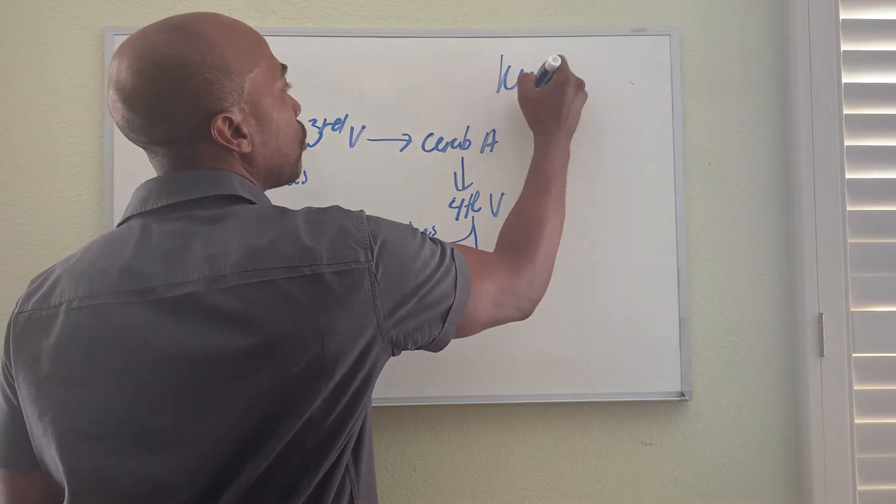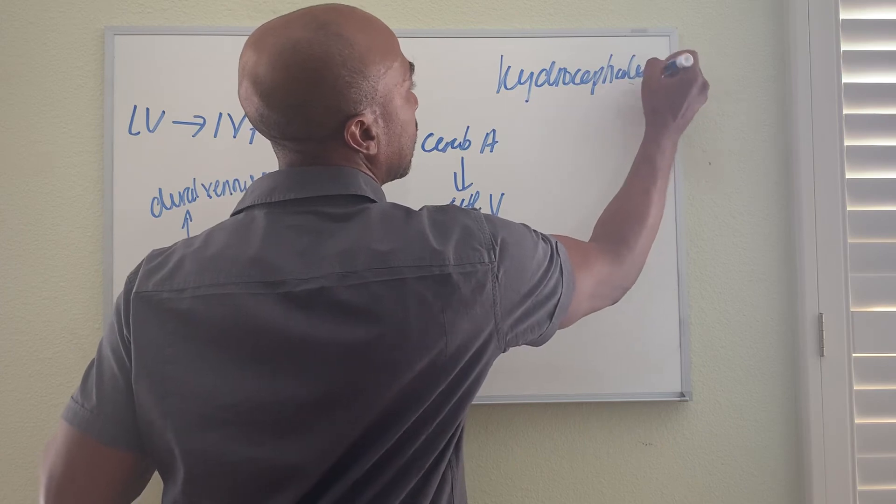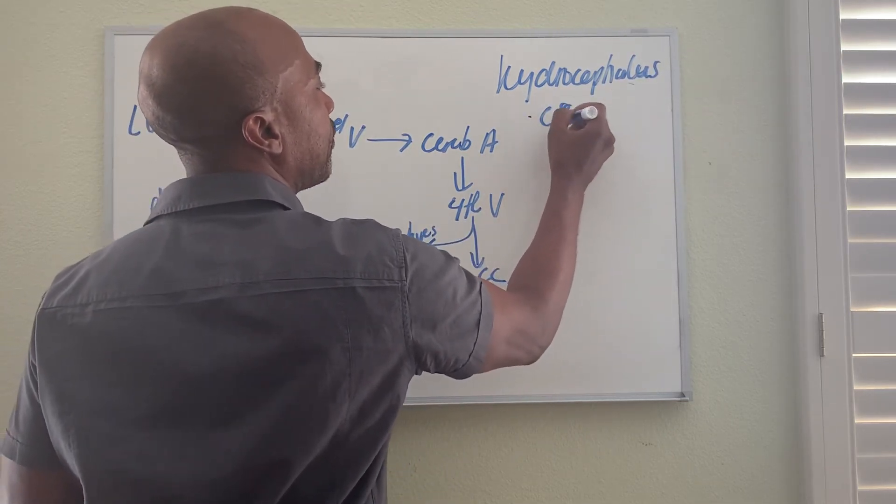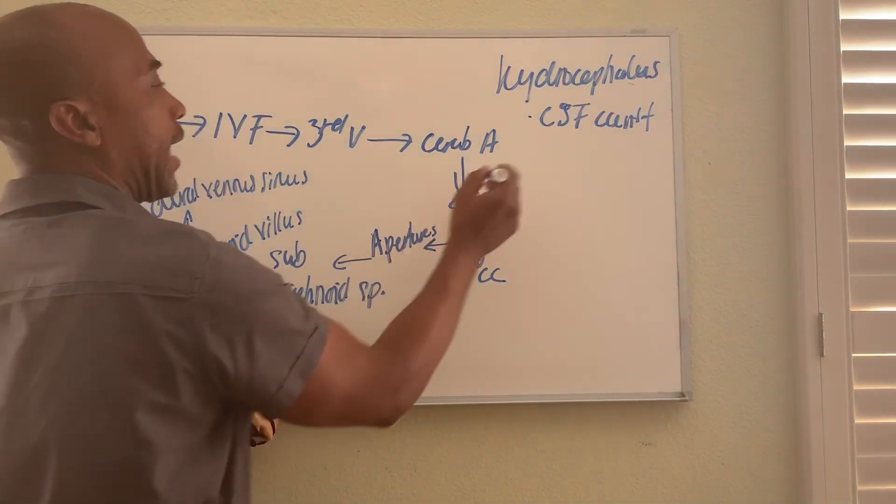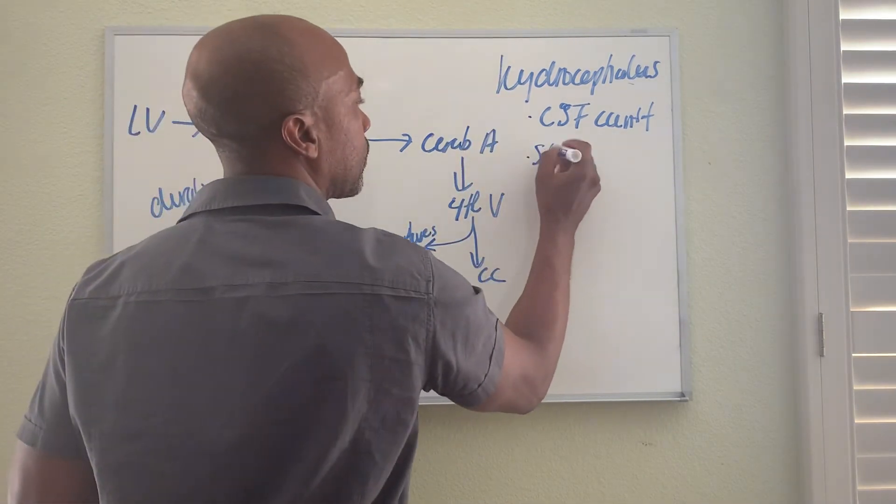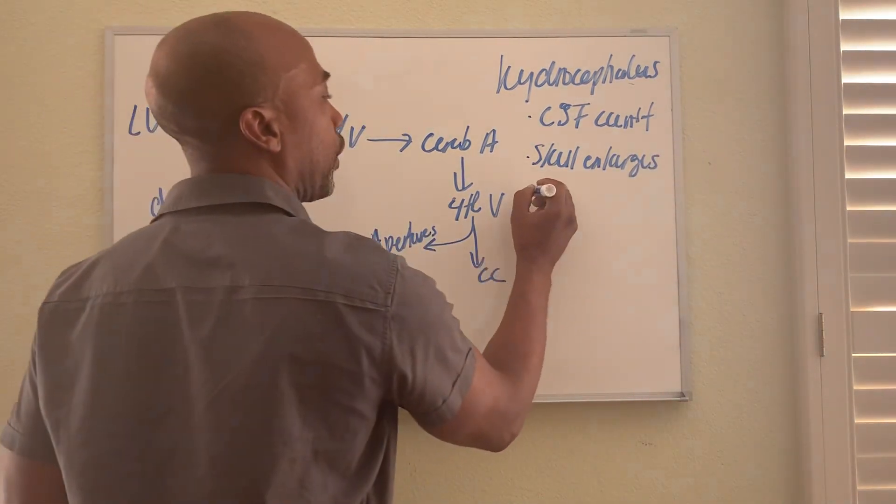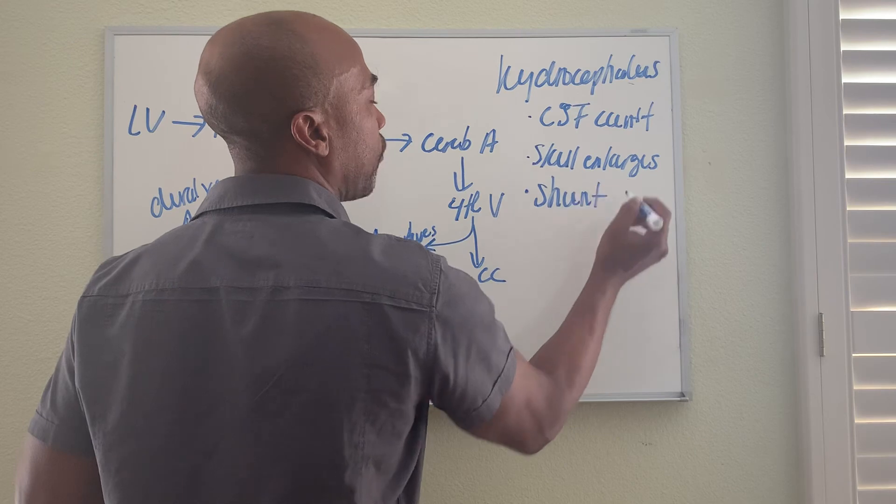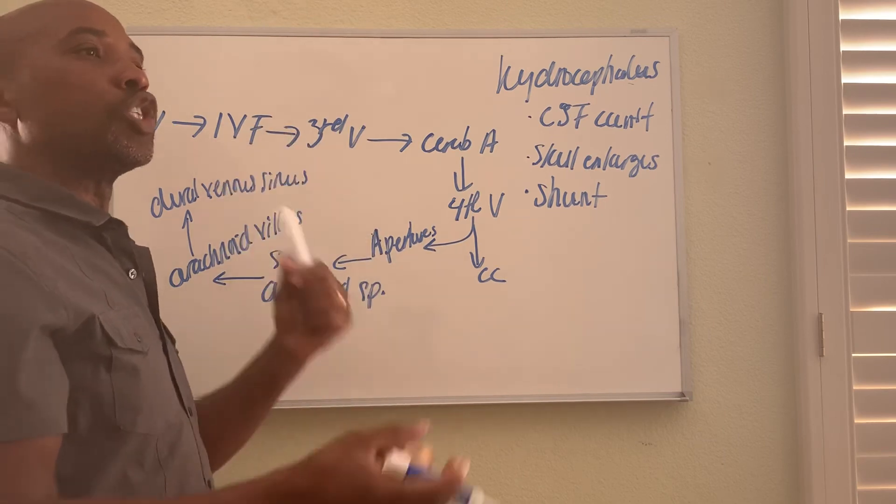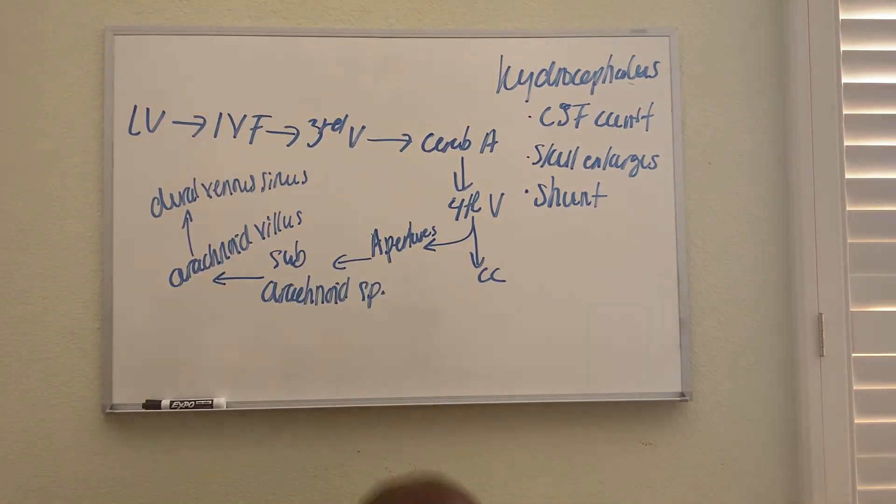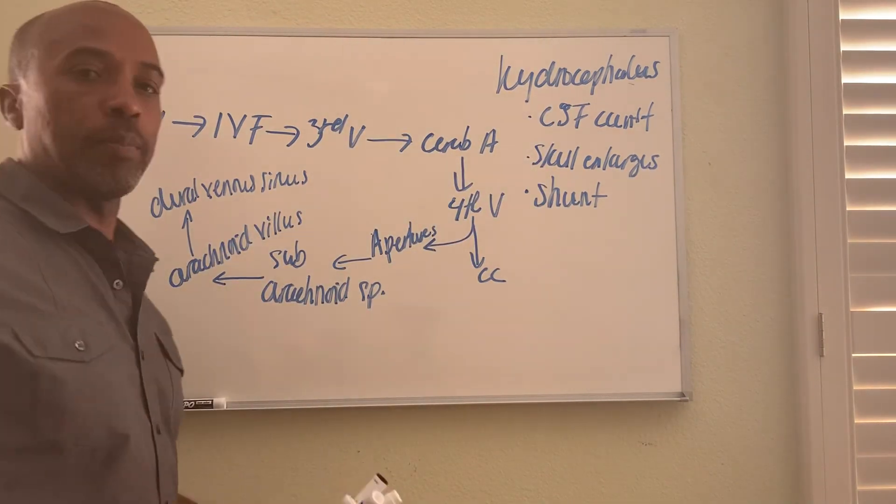Sometimes the CSF cannot drain out because you may have some blockage here. When that happens, it's called hydrocephalus. Hydrocephalus is when the CSF can't drain from the system, and so the skull enlarges when you are a newborn. Eventually you have to shunt it, create a tube that pushes it into the subarachnoid space and drains that tube into the stomach to pull the CSF out. Otherwise the water in the brain will eventually crush the brain. That's called hydrocephalus.